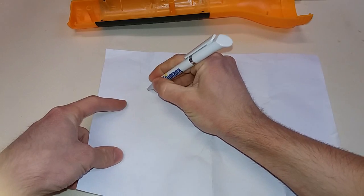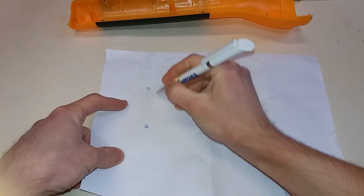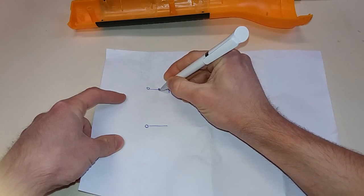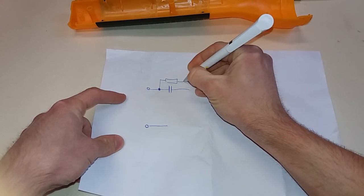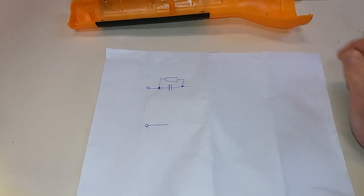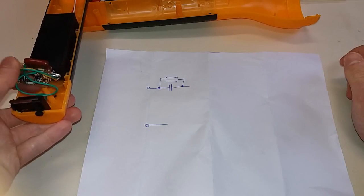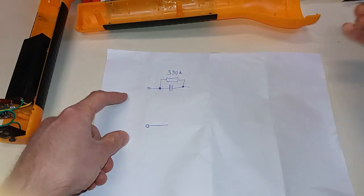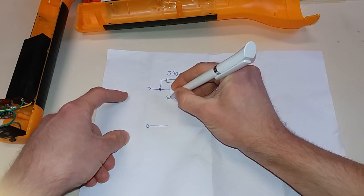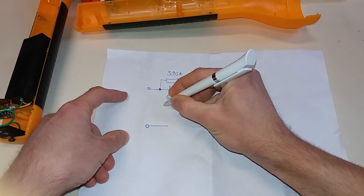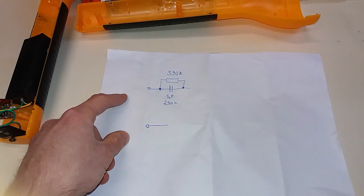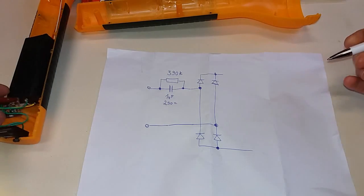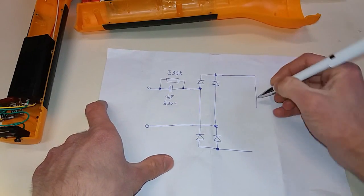So here you have mains coming in. There's the capacitor, the discharging resistor over it - 390k. And this is one microfarad, 250 volts actually DC. This goes to the bridge rectifier, and the bridge rectifier goes into the battery.